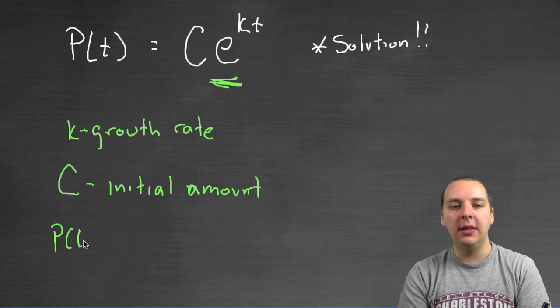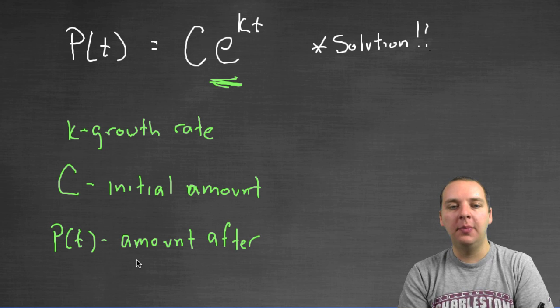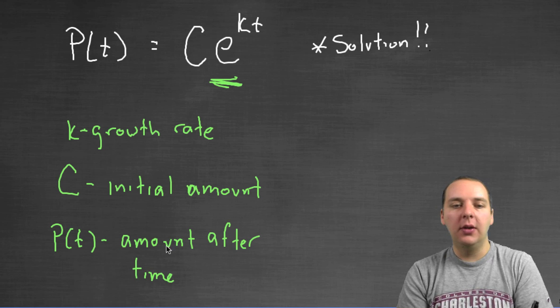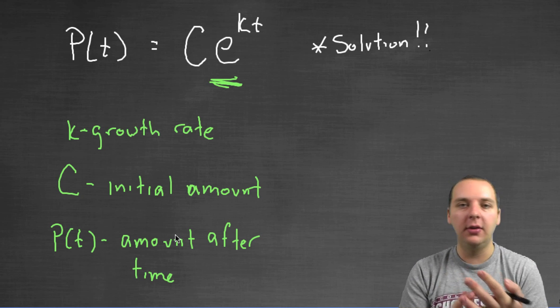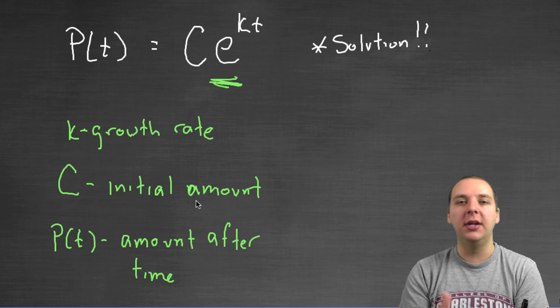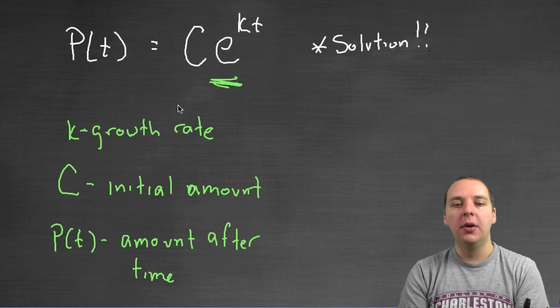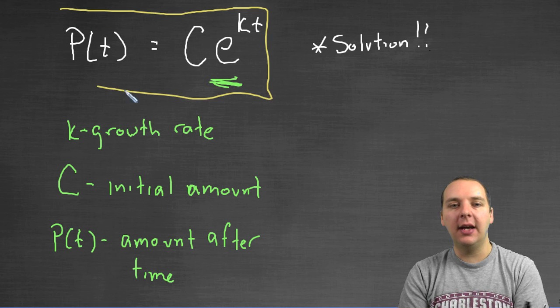All right, now, what's P of T? This is your amount after time T. So, what is amount? I have no idea. It could be amount of money, amount of people, amount of radioactive material. It could be the amount of anything that's changing exponentially. The value of your depreciating car that you just bought. It could be anything. But, nevertheless, this is your model for exponential growth and decay. So, commit this guy to memory.